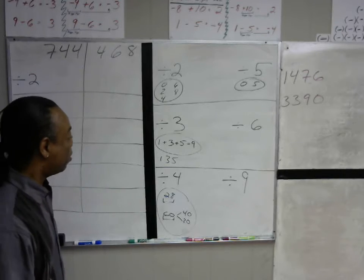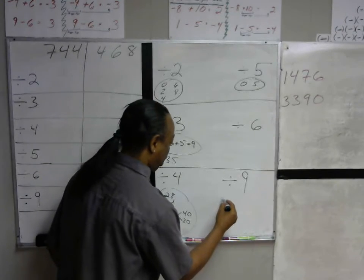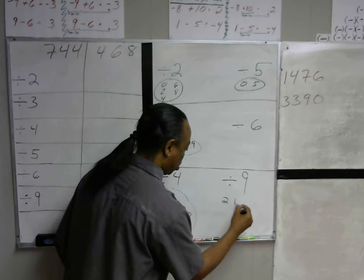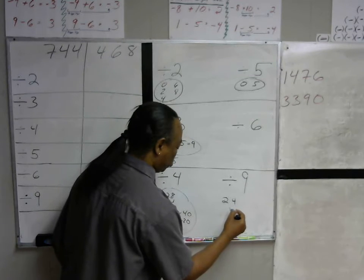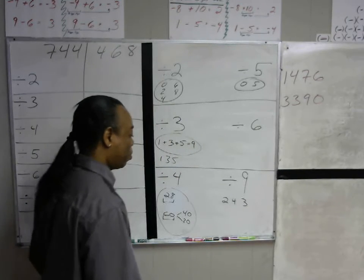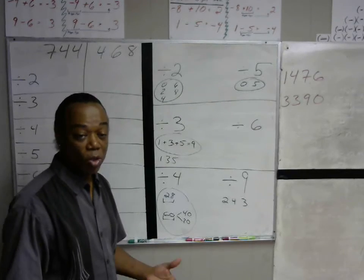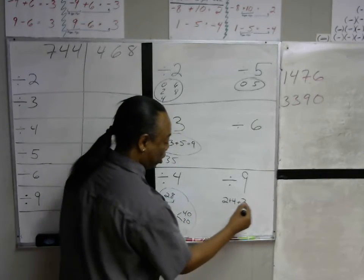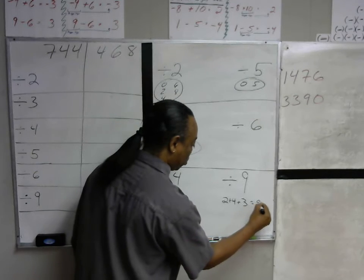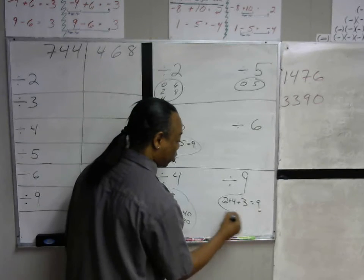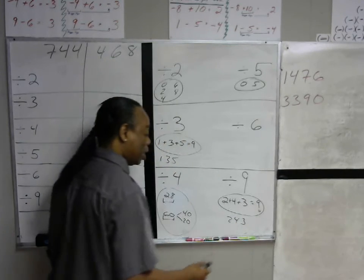9 has the same flavor. If you take all your digits and add them up — let's say you have 243 and you want to know if that's divisible by 9 — you add the digits: 2 plus 4 plus 3, that'll be 6 plus 3 is 9. If this sum is in the 9 times tables, then the original number 243 is divisible by 9.